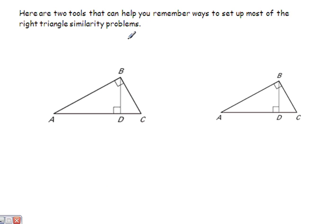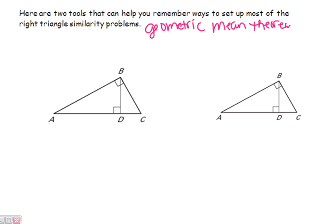Back when we were talking about the geometric mean theorems, I told you I was going to give you some tools to help you remember them. There were two theorems: the altitude and the leg. Let's start with the leg. The method we are going to use for the leg is going to be called the boomerang.